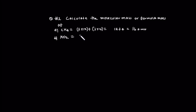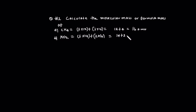So we calculate the atomic mass needed. The molecular mass comes to 16 atomic mass units. Next is sulfur trioxide, SO3.